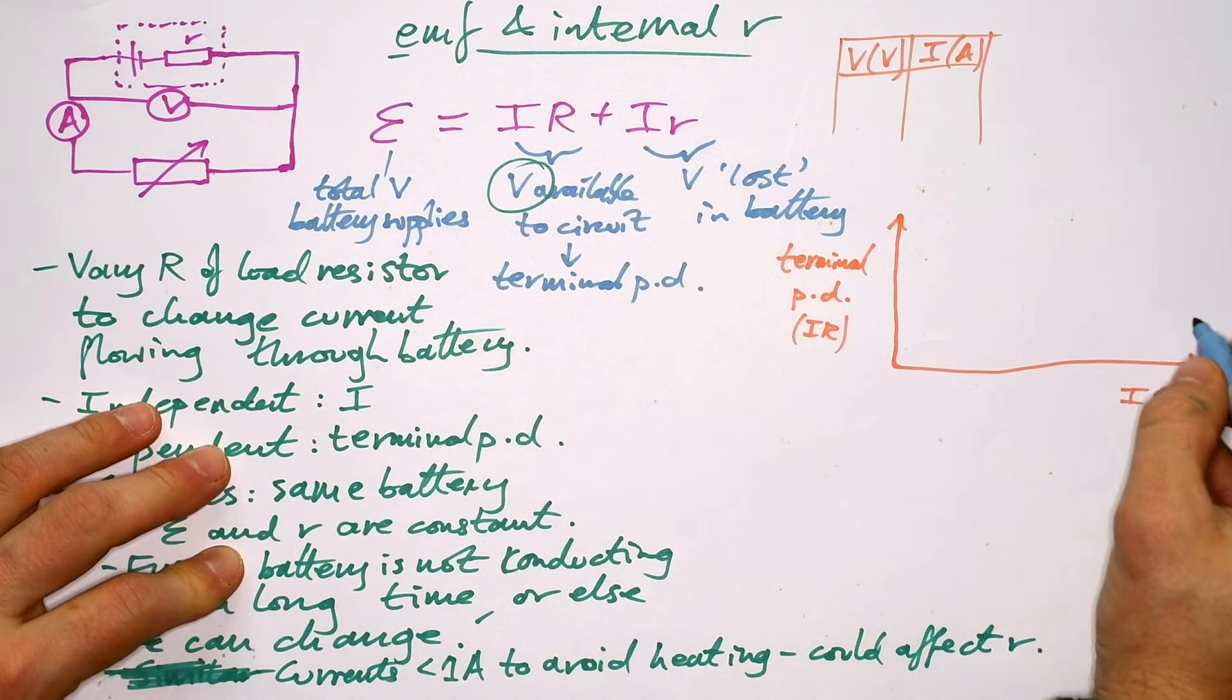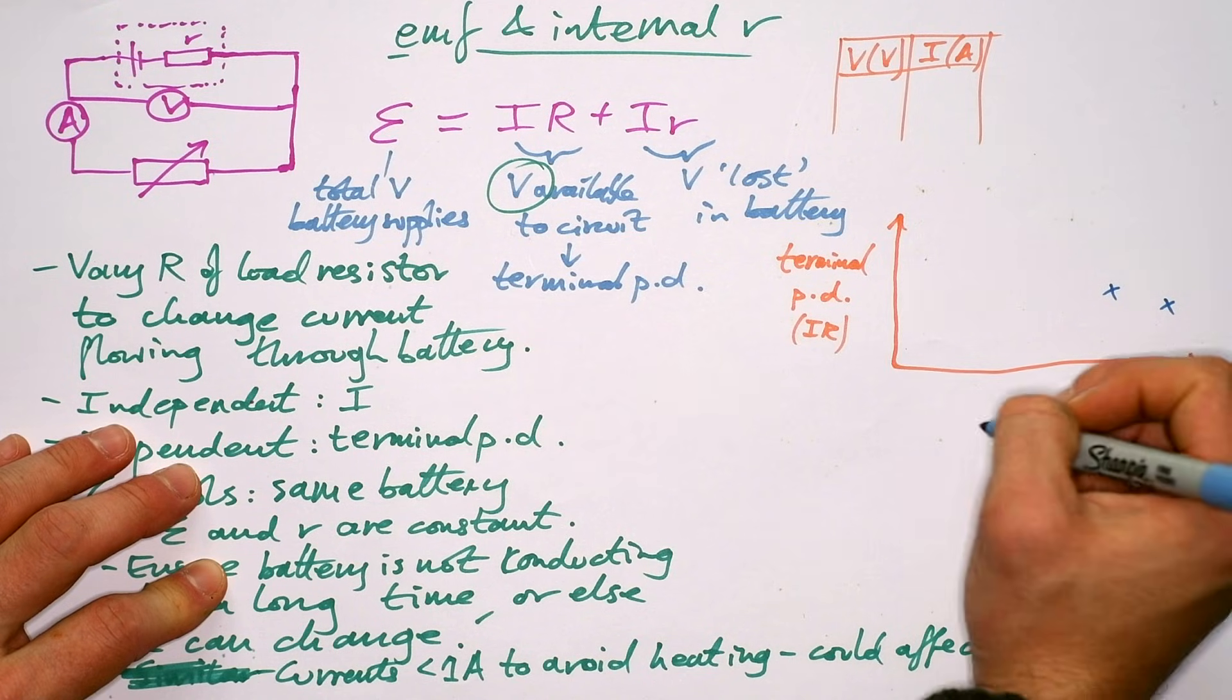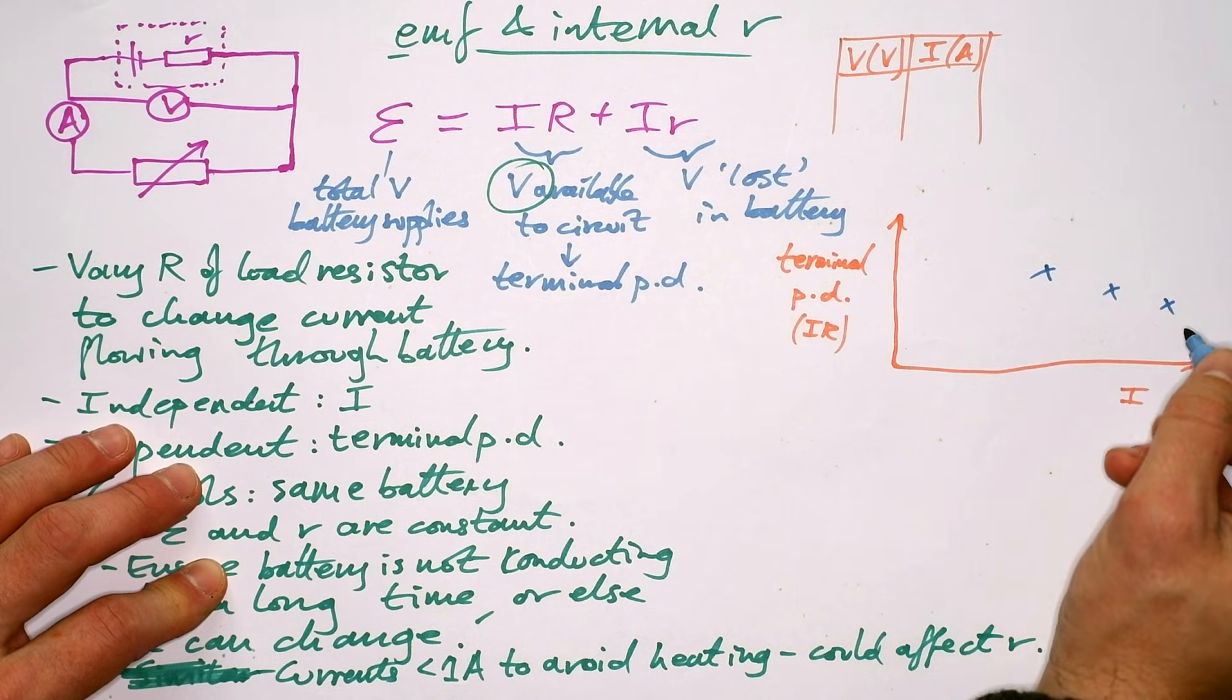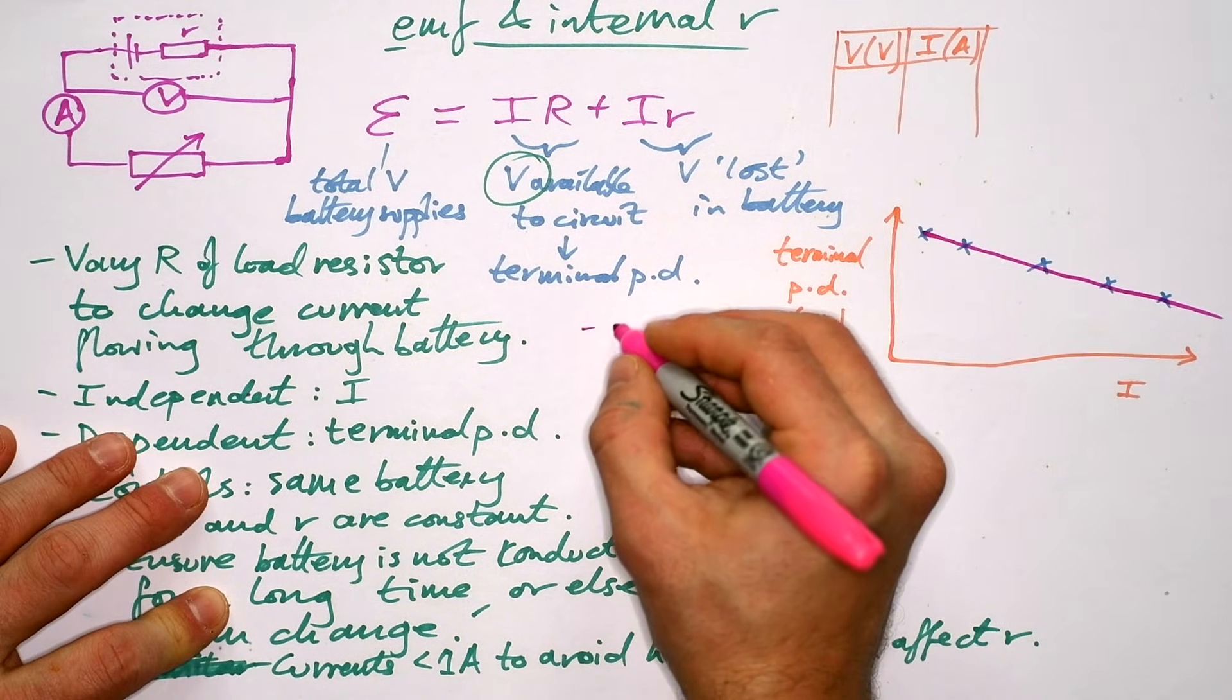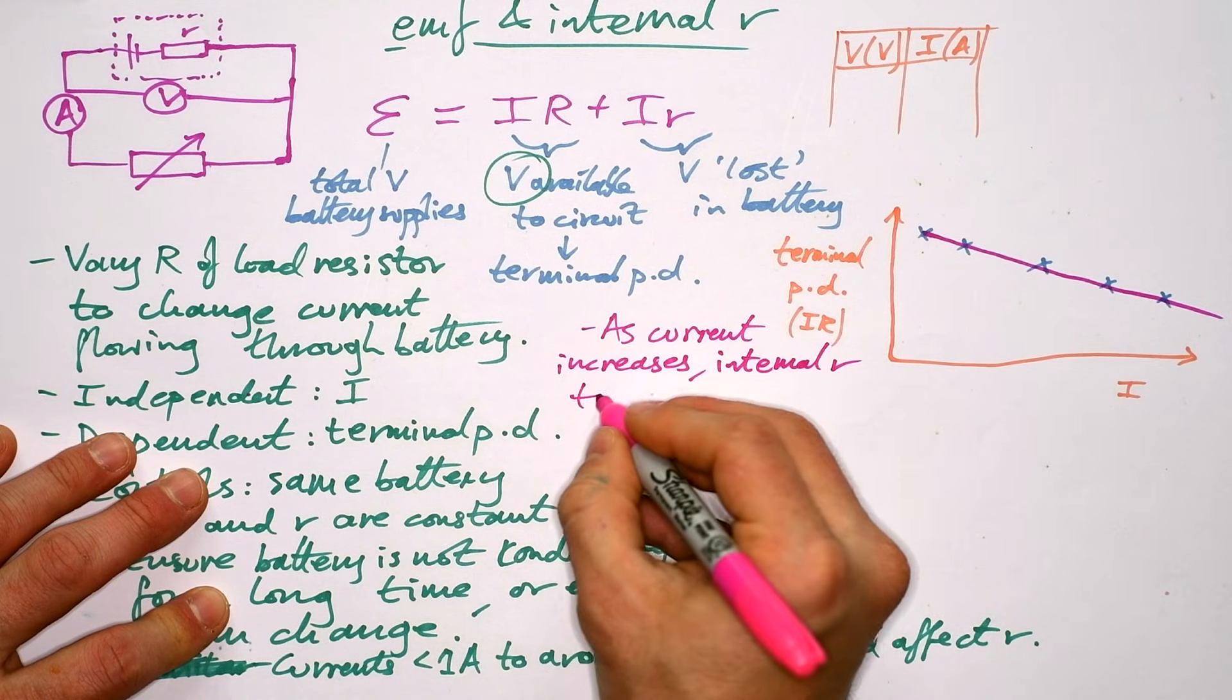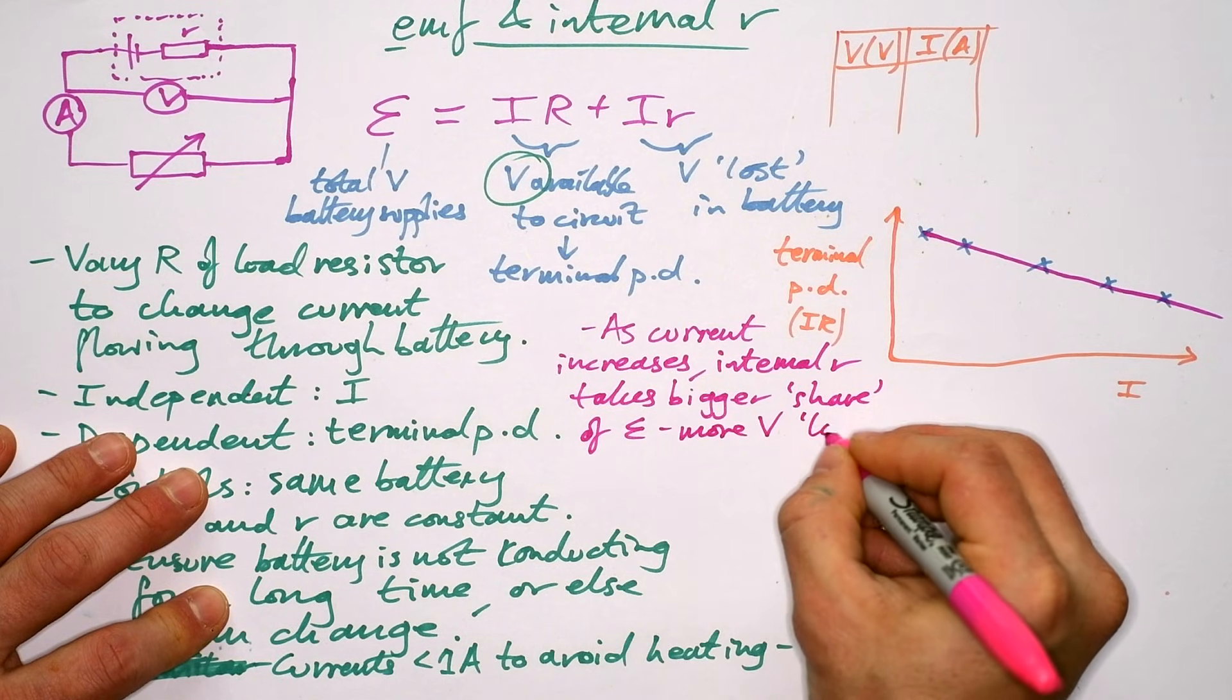What we find is that if we start at high currents, which is what I recommend doing, and we increase the resistance, and so we end up with, if we increase the resistance, what we find is that the current decreases. This is because as current increases, internal resistance takes bigger share of the EMF, more voltage lost in the battery.